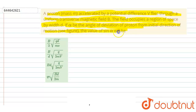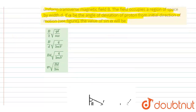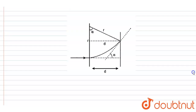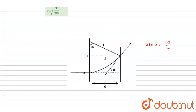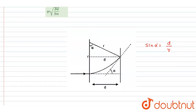You have to find out sin(alpha). If you see the diagram, it will look like this. We want sin(alpha), and you can see from the diagram that sin(alpha) equals d divided by r, where r is the radius of the circular path.